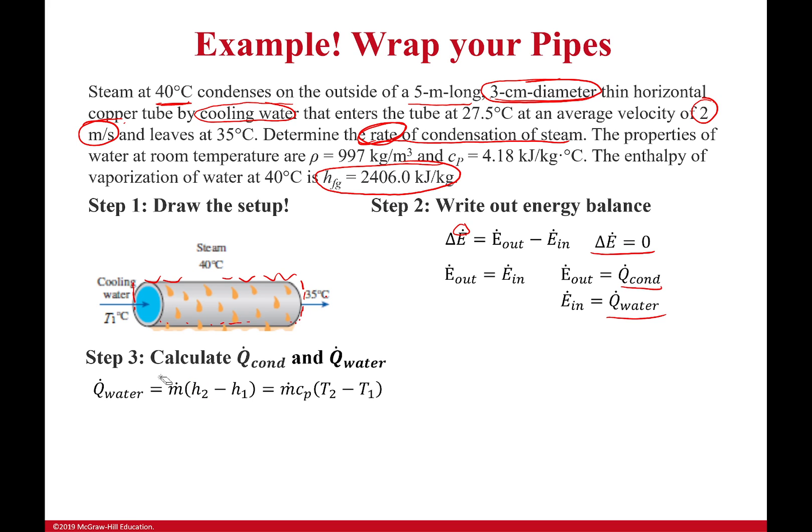I'm going to get that my mass flow rate times the change in enthalpy from one side to the other, from here to here - this is two, that's one - is going to be equal to how much heat that water is gaining. In this case, it's gaining from the condensing steam.